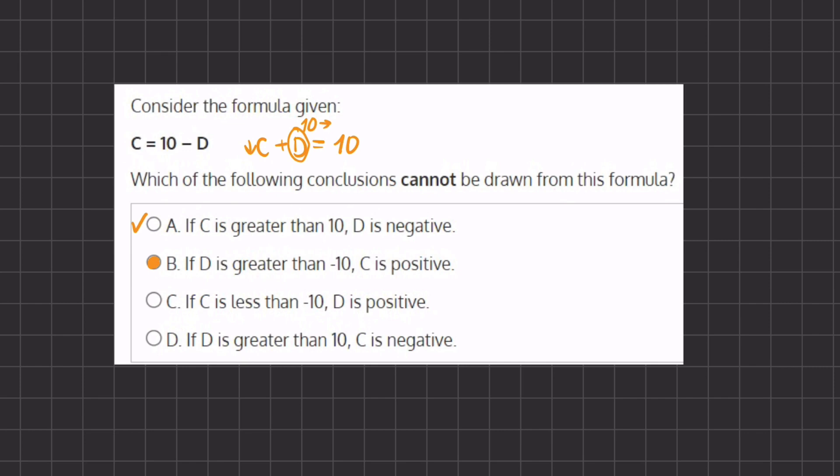Let's move on to c and d to see why they are correct. Okay, if c is less than negative 10, d is positive. Well, the turning point is at 10 or at negative 10. So if c is less than negative 10,